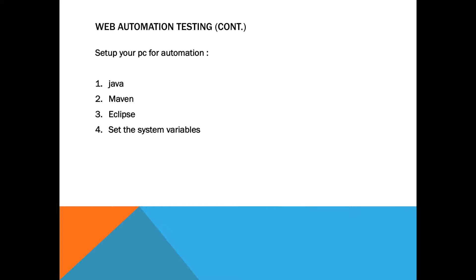Before we start, let's make sure that everything is set up and prepared on your PC. First, we have to make sure that we have the latest version of Java, and we can check it through terminal or command prompt in Windows. Second, we have to make sure that we have the latest Maven version, a correct IDE, and that we have set up our system variables in Windows and bash file on Mac. So let's get started.